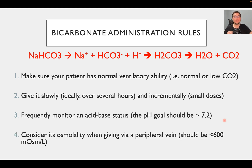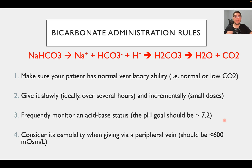Rule number four: consider the osmolality of the solution when giving by peripheral vein. The typical guideline is that osmolality should be less than 600 milliosmoles per liter. In the Excel spreadsheet calculator, there is a tab for osmolality where you can plug in the concentration and volume of your bicarbonate solution and other fluids. If the result is greater than 600, it's probably not appropriate for peripheral vein, and if you cannot dilute it further, you need to use a central line.